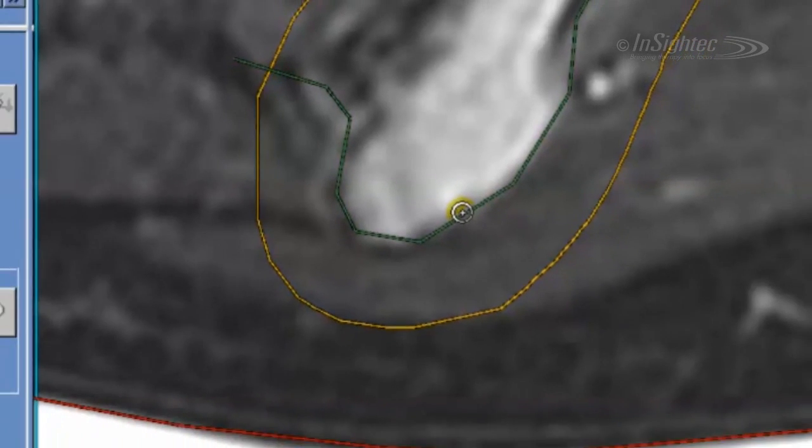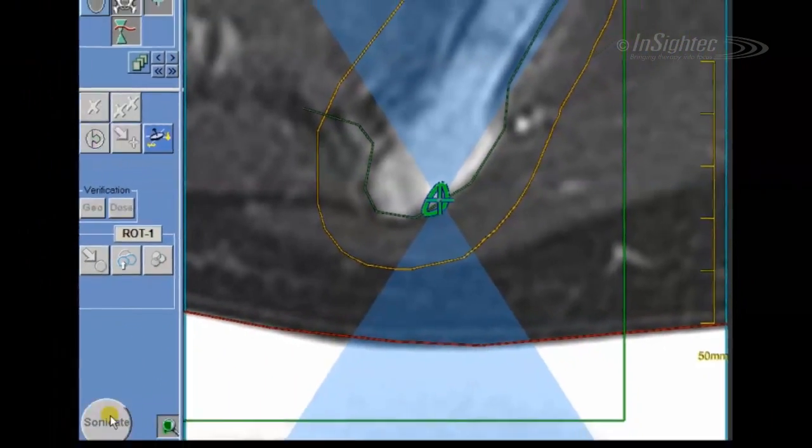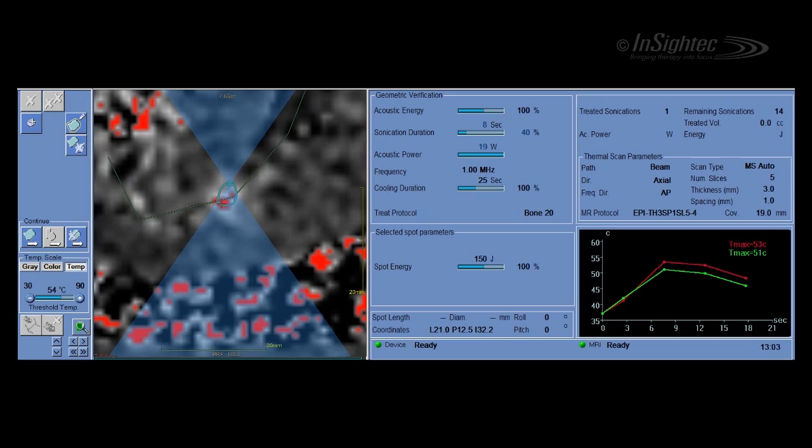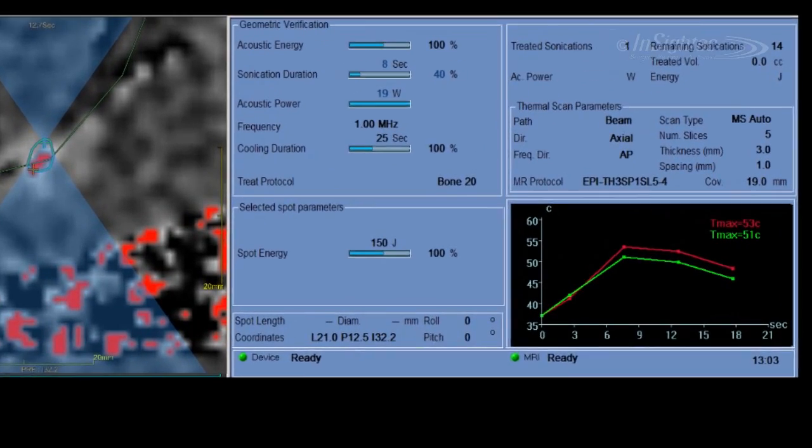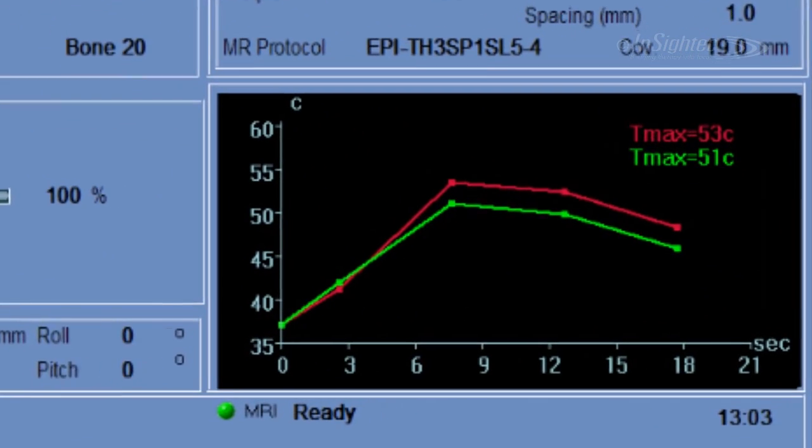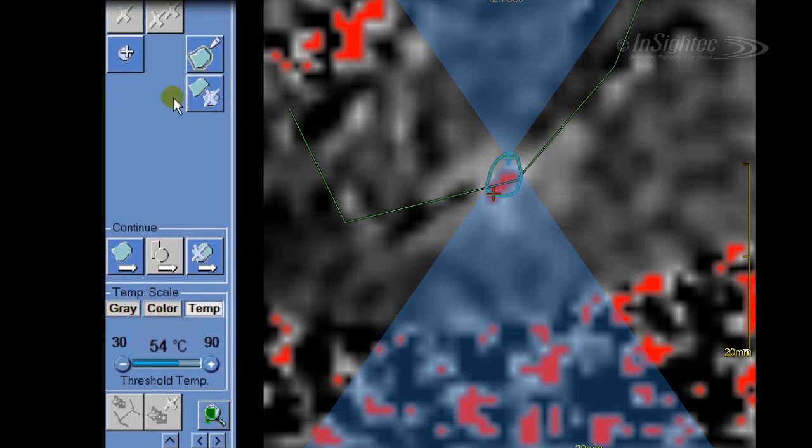Targeting accuracy is verified using a low sub-therapeutic test sonication. This identifies the point of actual energy delivery. Adjustments can be made to correct tissue-specific beam deviations.